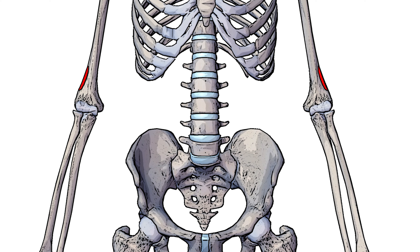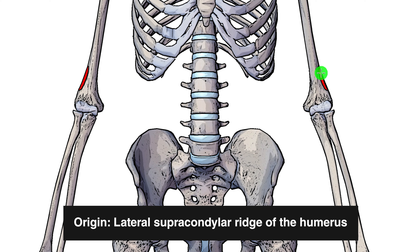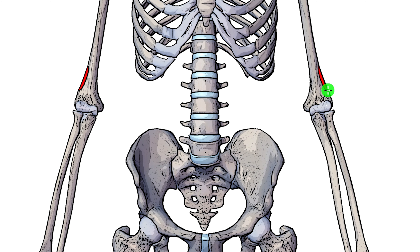Next we can see the origin marked out here in red. You can see the medial epicondyle of the humerus here and just lateral to it the lateral epicondyle. Starting on the lateral epicondyle there will be a ridge coming up this area here. That ridge is called the lateral supracondylar ridge of the humerus and that's going to be our origin point for the brachioradialis muscle.